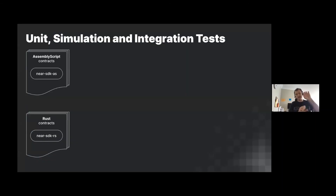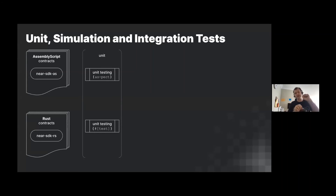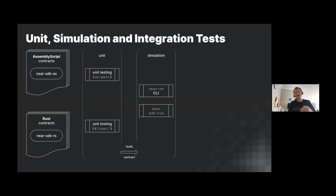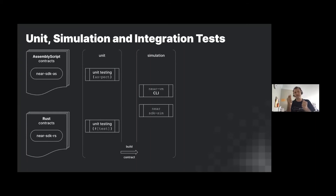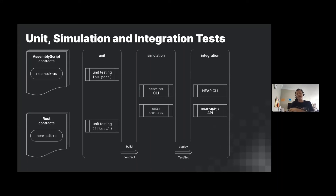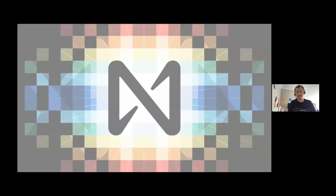For testing: AssemblyScript uses the Aspect library, which looks like RSpec; Rust has testing baked in with the test macro. You build the contract and can simulate behavior by calling one method at a time from the NEAR VM at the CLI. For simulating multiple contracts and cross-contract calls — asynchronous calls, callbacks — you use the NEAR SDK sim to spin up a virtual machine with multiple accounts. Finally, you deploy to testnet for integration testing with near-cli, near-api.js, or tools like Mocha.